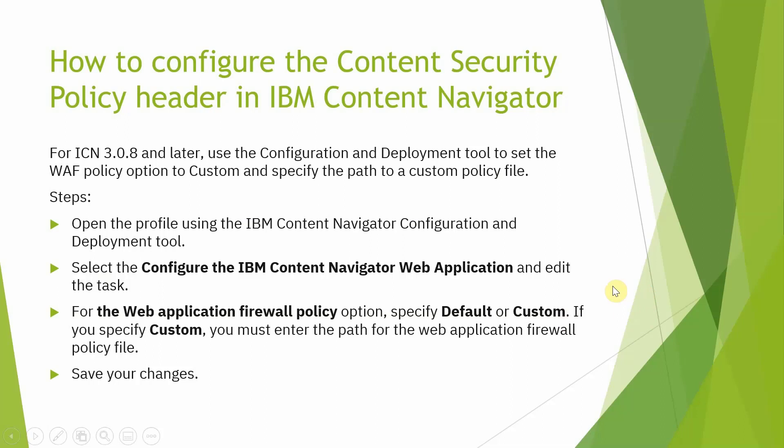Steps. First, open the profile using the IBM Content Navigator configuration and deployment tool. Select the IBM Content Navigator web application and edit the task. For the web application firewall policy option, specify default or customer. If you specify customer, you must enter the path of the web application policy file.